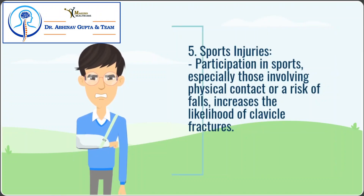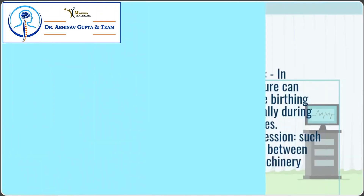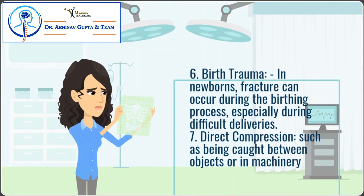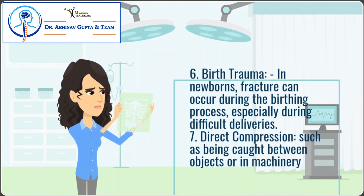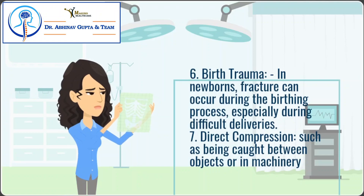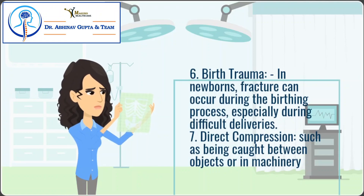Sixth, birth trauma: in newborns, a fracture can occur during the birthing process, especially during difficult deliveries. Seventh, direct compression, such as being caught between objects or in machinery, can also cause a fracture.